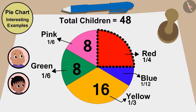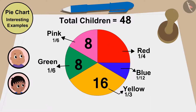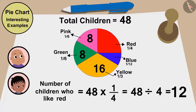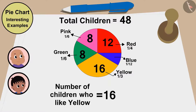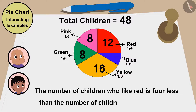Raju says, 'Bablu, the share of children who like red is also quite large, but it is a little smaller than the share who like yellow. Let's find out how many children like red.' The number of children who like red is 48 times one fourth, or 48 divided by four — which is 12 children. Yellow color is liked by 16 children, meaning the number who like red is four less than those who like yellow.